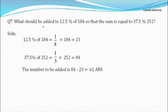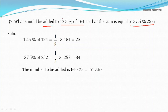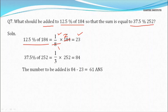Question 7: What should be added to 12.5% of 184 so that the sum equals 37.5% of 252? From the table, 12.5% = 1/8, so 1/8 × 184 = 23. Similarly, 37.5% = 1/3 (refer to the table), so 1/3 × 252 = 84.